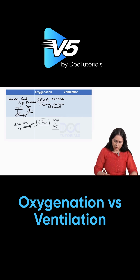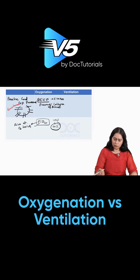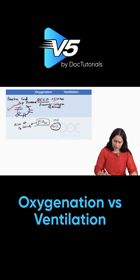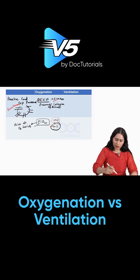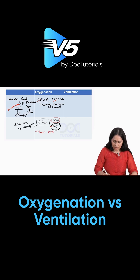If we keep a very high PEEP, there is a risk of barotrauma as well. So we need to control both PEEP and FiO2. We titrate at what minimum PEEP and minimum FiO2 we achieve just adequate oxygenation. If the patient has high FiO2 and low PEEP, we increase the PEEP. If the patient has high PEEP and low FiO2, we increase the FiO2. We balance to achieve just adequate oxygenation with minimum PEEP and FiO2.